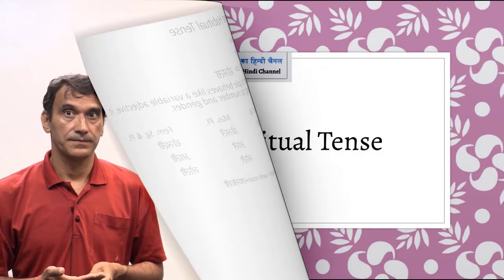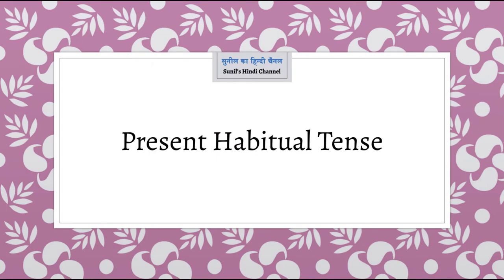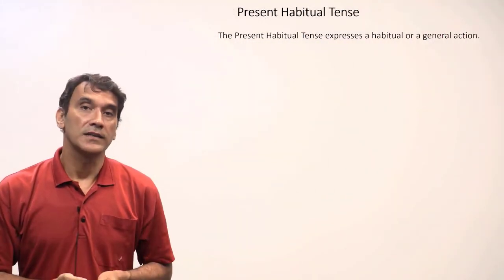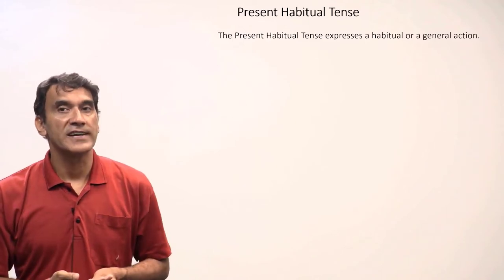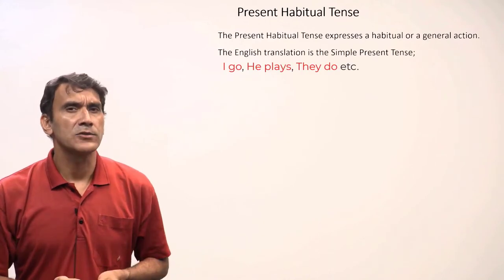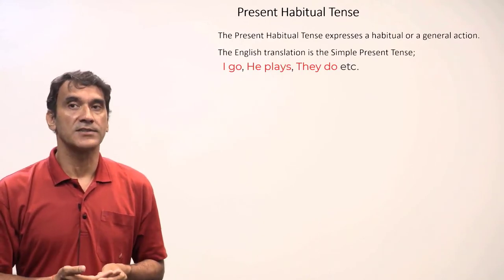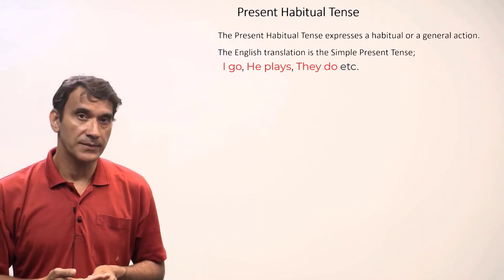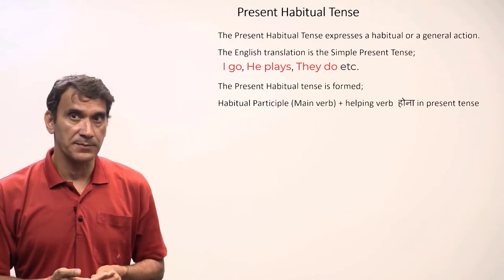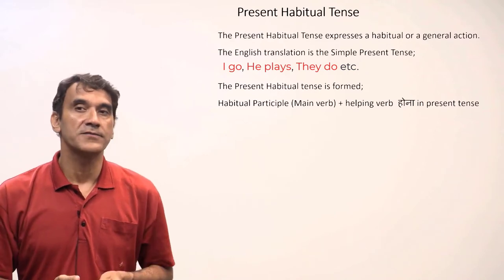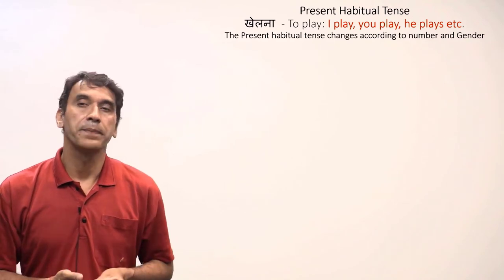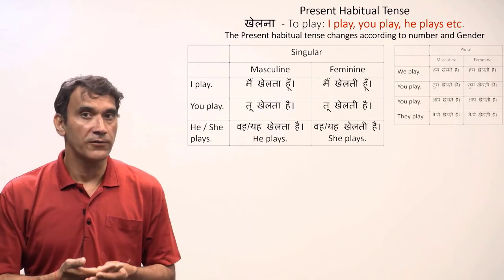The present habitual tense expresses a habitual or general action. It is similar to English simple present tense such as I go, he plays, they do, etc. The present habitual tense is formed with the habitual participle of the main verb and the present tense form of the helping verb 'hona.' We will take the verb 'khailna' to play and conjugate it through all the forms.